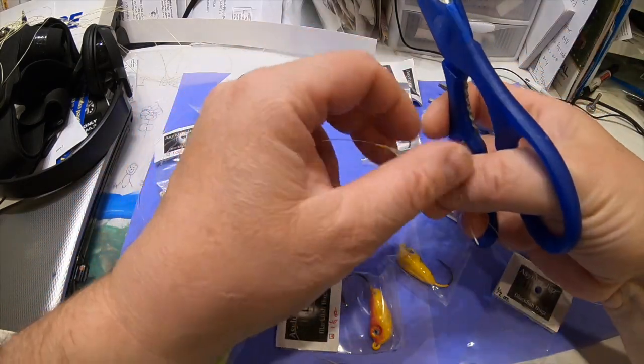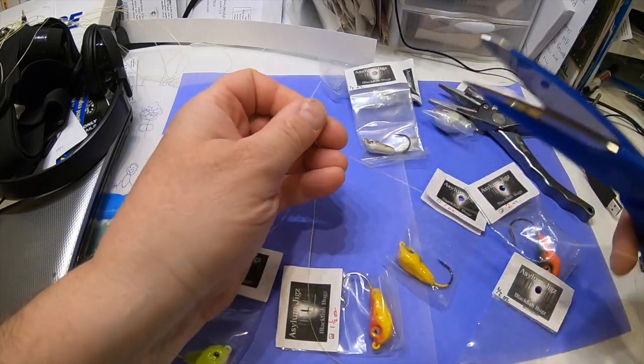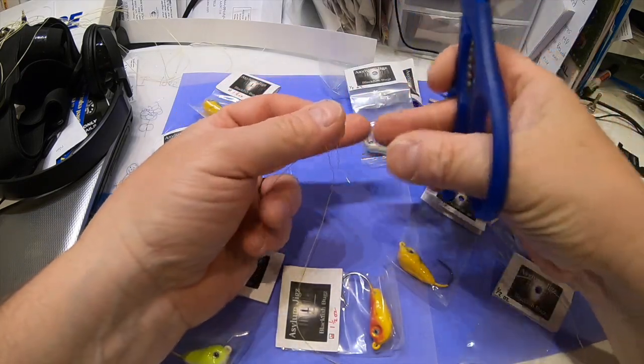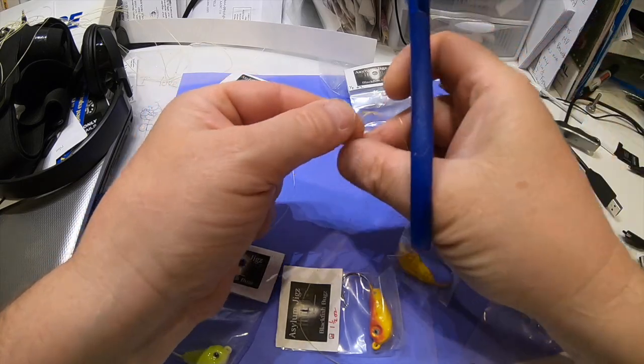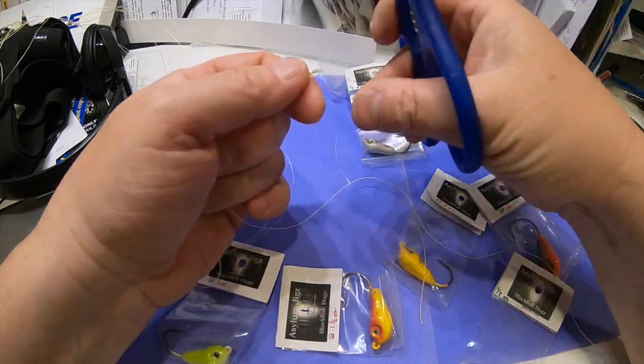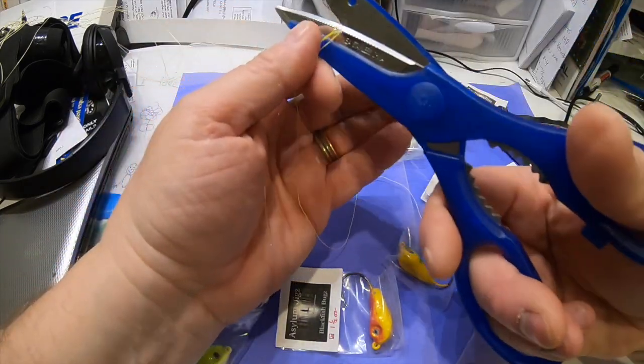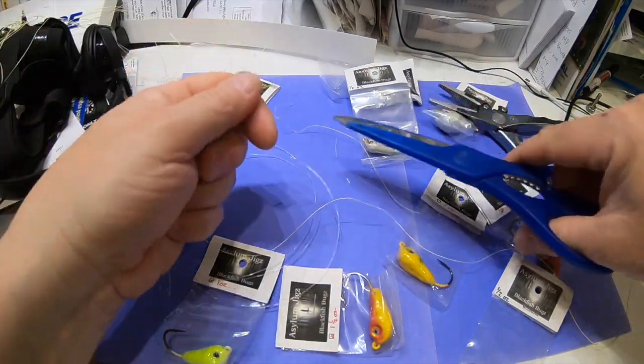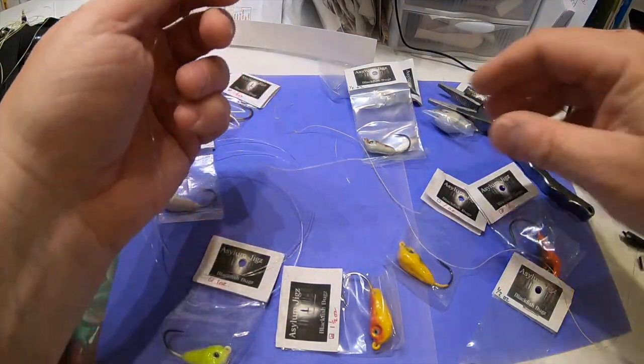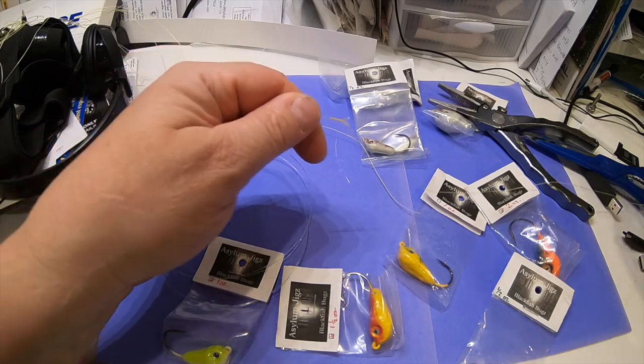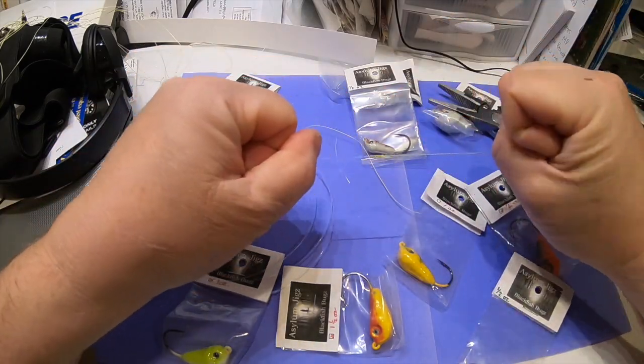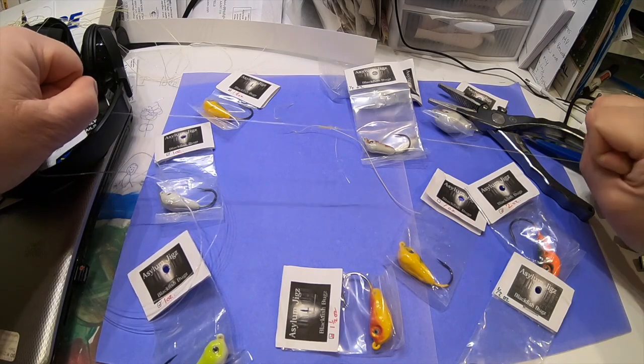I'm going to take my scissor, I'm gonna trim both tag ends off right down to the knot basically, so there's really not much to hang up on. See how easy that just sliced off, just like butter. That is my braid to mono connection.